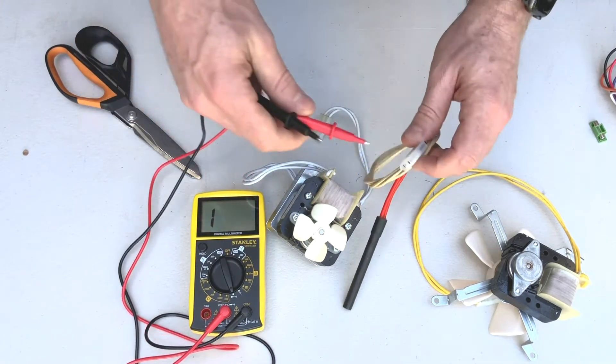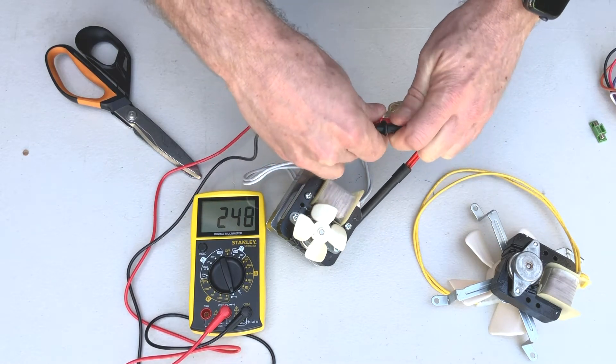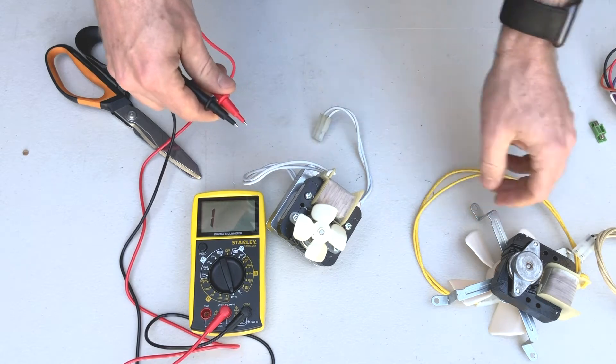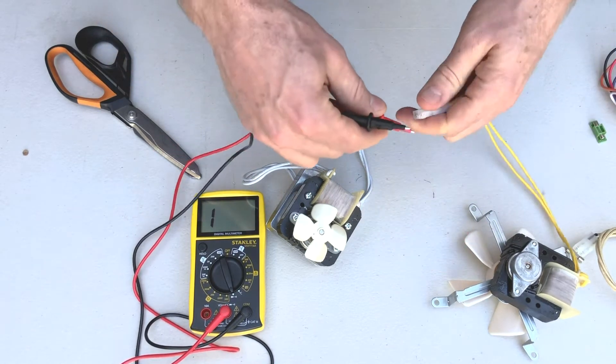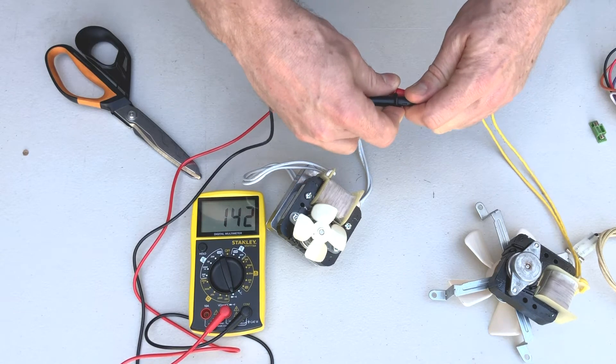So if we go ahead and we test this ignition rod here. Okay, that's good. There's no beeping noise and we've got a resistance reading on the screen, which means that it's working properly. Do the same thing with this one. Cool. We've got a resistance reading there.